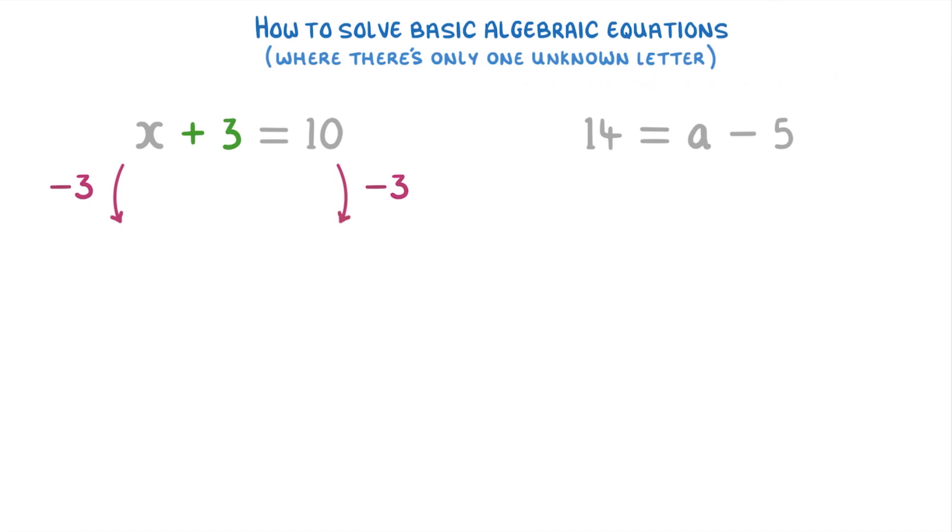Put a minus three next to them both so that you know to subtract three from both sides. You won't get any marks for this in the exam, but it helps for more complicated questions where it's really easy to get confused. So if we subtract this three from the left side, then it will get rid of the three that we already have and we'll be left with just X on the left. Then for the right, 10 minus 3 is 7, so we just put 7, and we now have our answer that X equals 7.